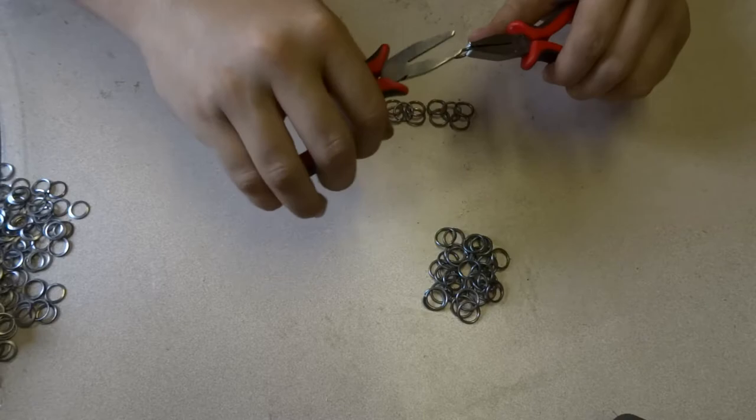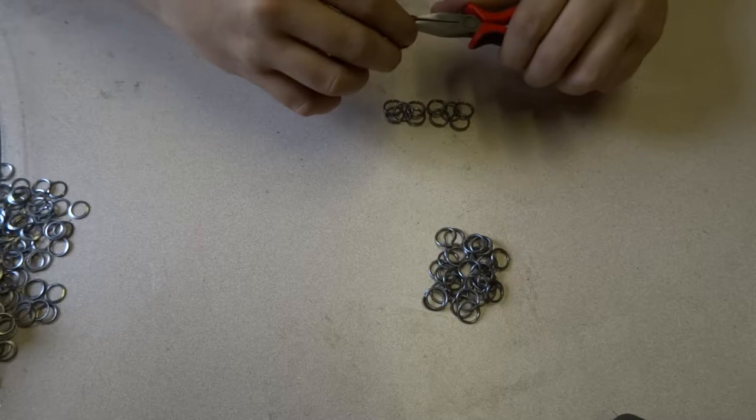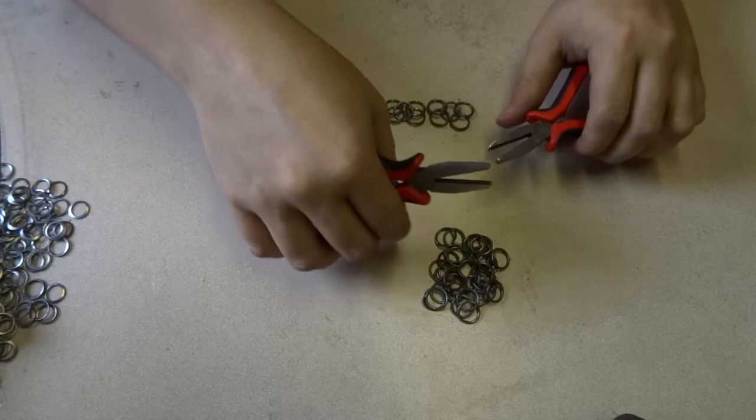Quick is a relative term when you're talking about making armor, however. With butted mail, I can produce about a pound of finished armor per hour, and that is on the quicker end of what's possible when you're producing it by hand.